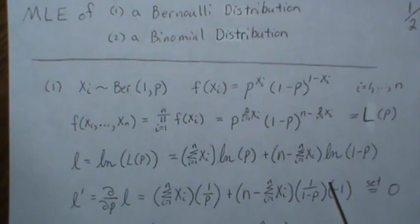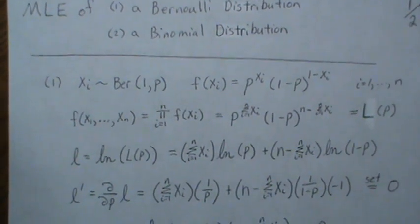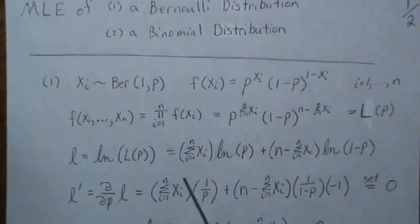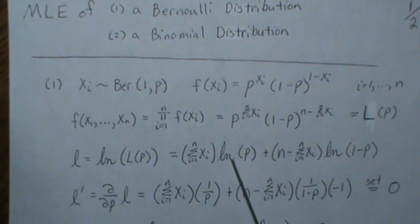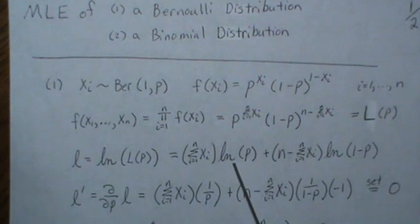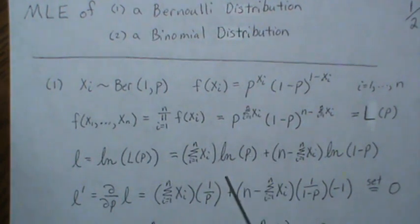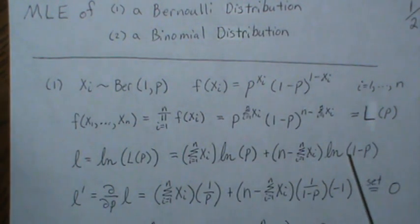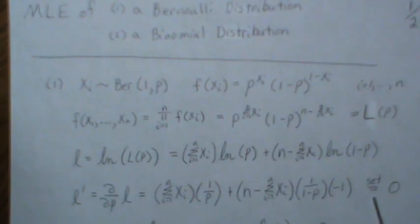Now we want to maximize this, so we take the derivative with respect to p. This is a constant, so it comes out front. The derivative of the log is 1 over, and then times the derivative of what's inside, which is 1. This is constant, derivative of this is 1 over 1 minus p times the derivative of this with respect to p, which is minus 1. We set it equal to zero.